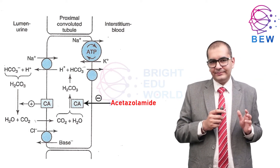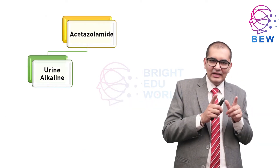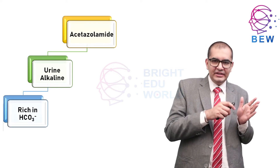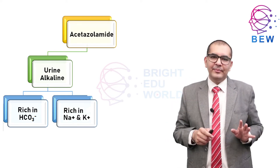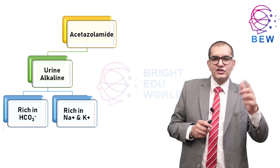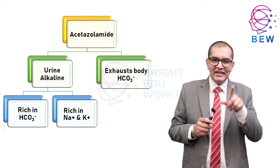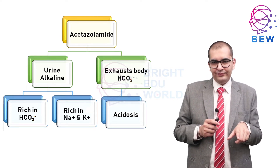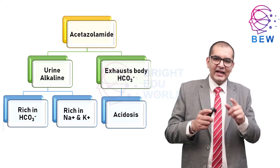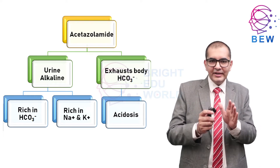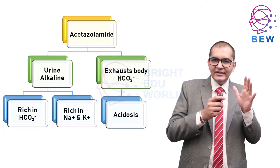The urine produced under acetazolamide action is alkaline and is rich in HCO3, which is matched by both Na+ and K+. Continued action of acetazolamide depletes the body's HCO3 minus and causes acidosis. Less HCO3 is filtered at the glomerulus, thereby leading to a self-limiting diuretic action.